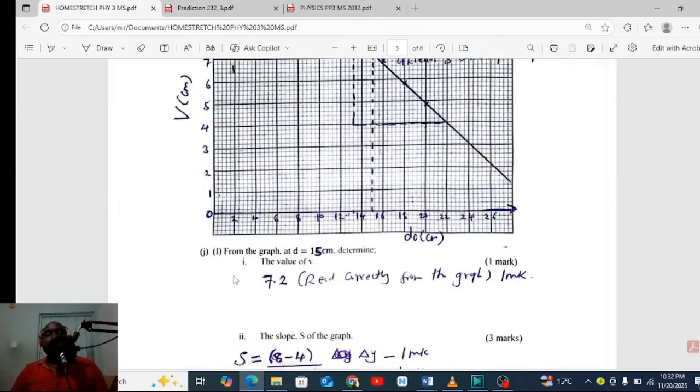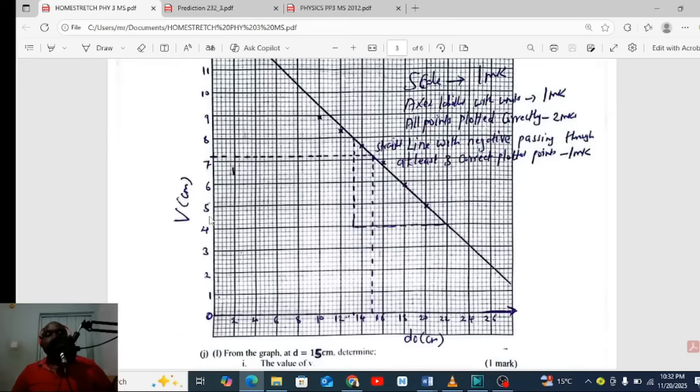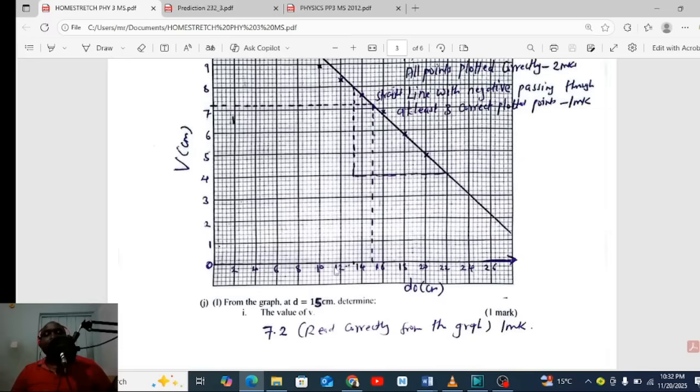From the graph, at d equals 15, determine the value. So using this one, remember this is d, the x-axis, and v is the y-axis. I hope you have no problem in drawing this graph. Now you will come here and find the value of 15, then draw a dotted line to the straight line.